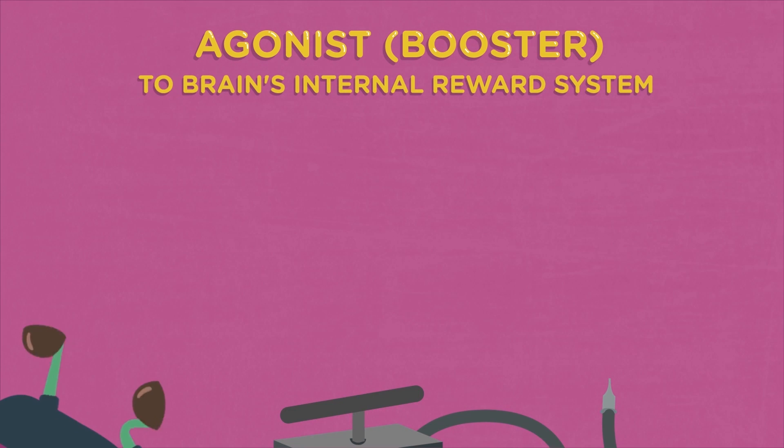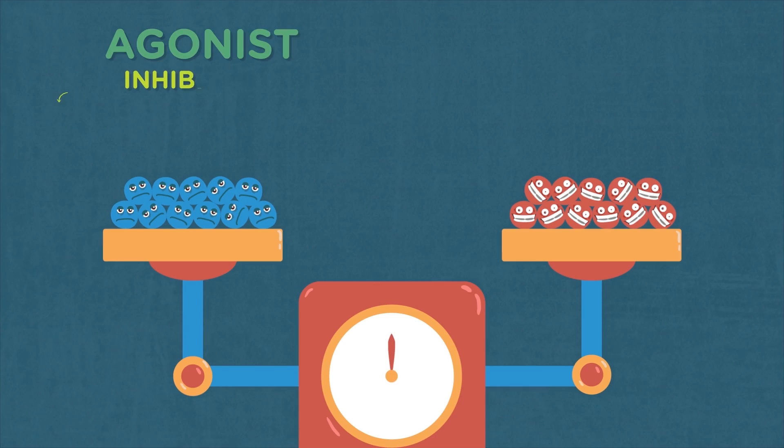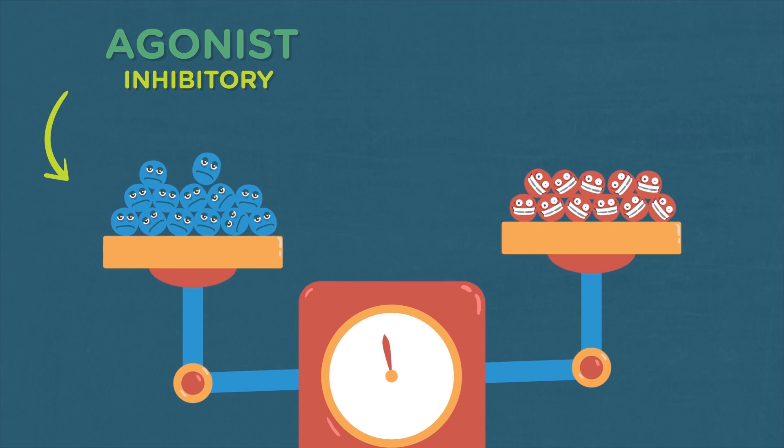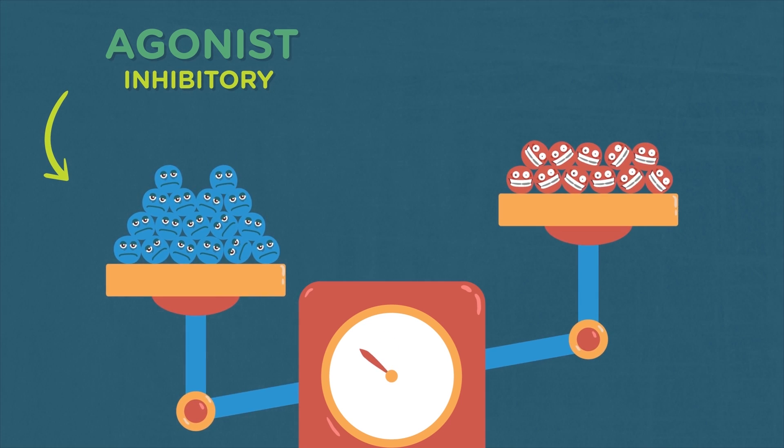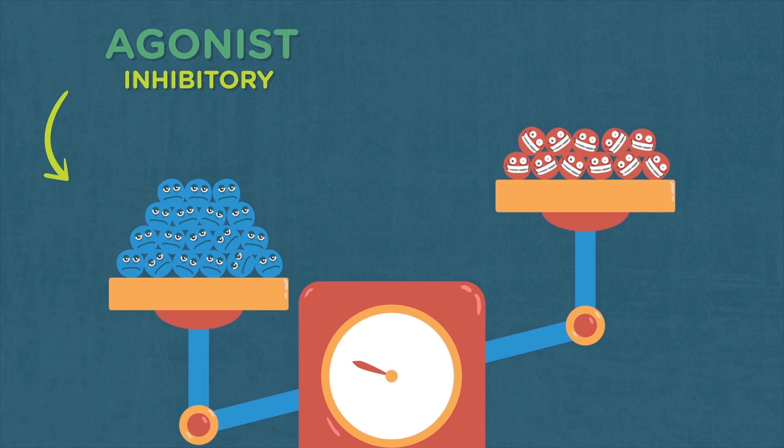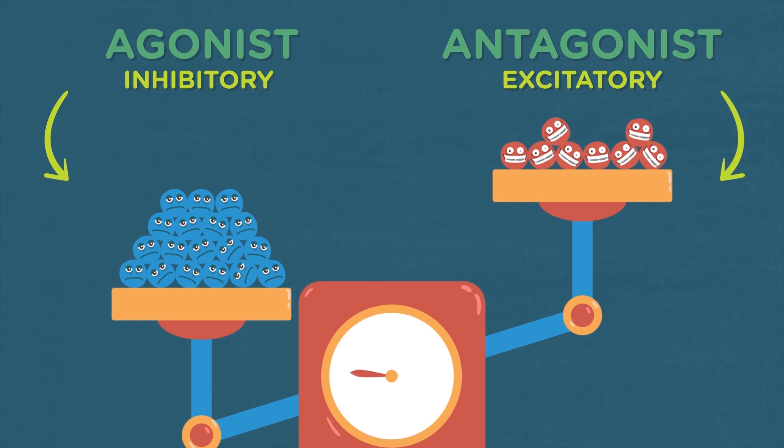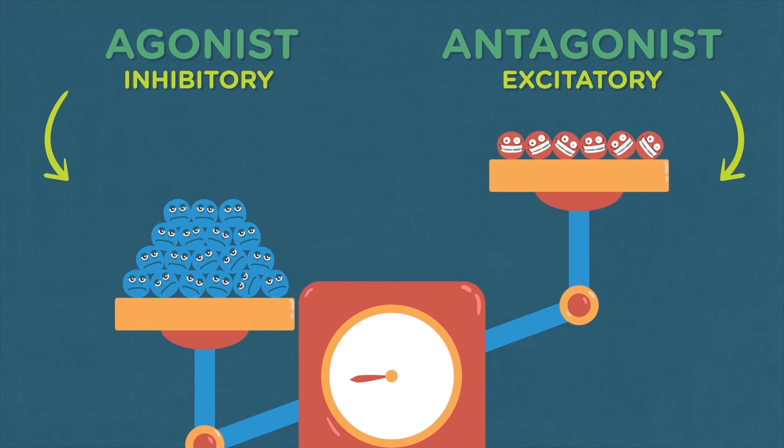That's what can give people the relaxed feeling you may have heard about. But alcohol also acts as an agonist to inhibitory neurotransmitters, increasing their ability to slow down brain functions. Simultaneously, it acts as an antagonist to excitatory neurotransmitters, decreasing their ability to stimulate brain activity.